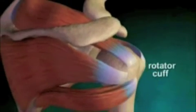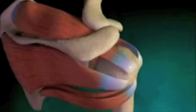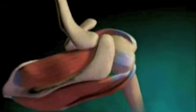Two sac-like structures called bursa are also located in the shoulder. The bursa secrete a lubricating fluid which helps reduce friction between the moving parts of the joint.